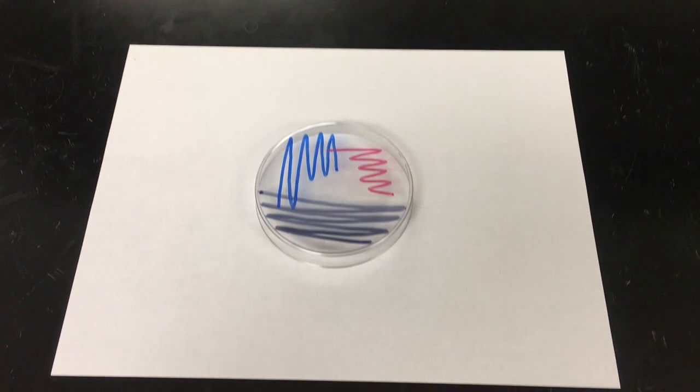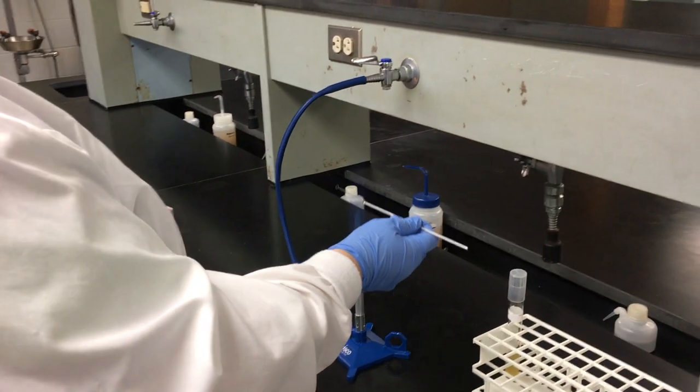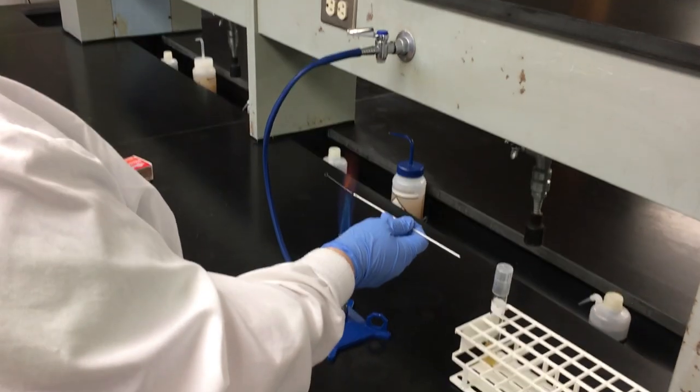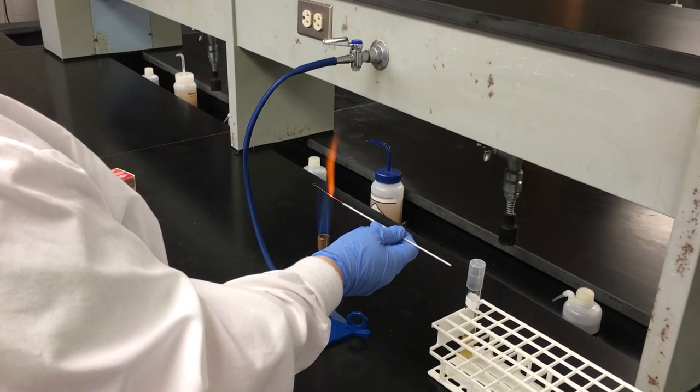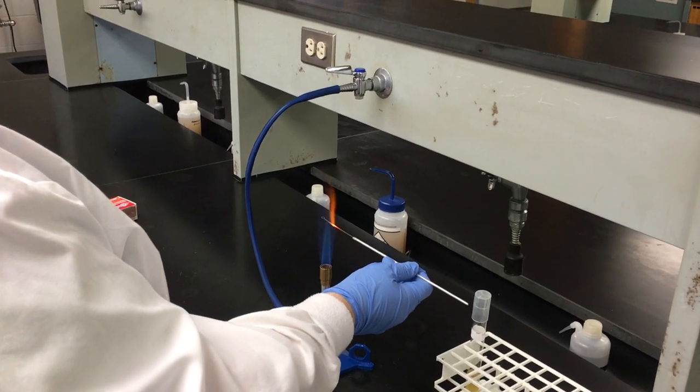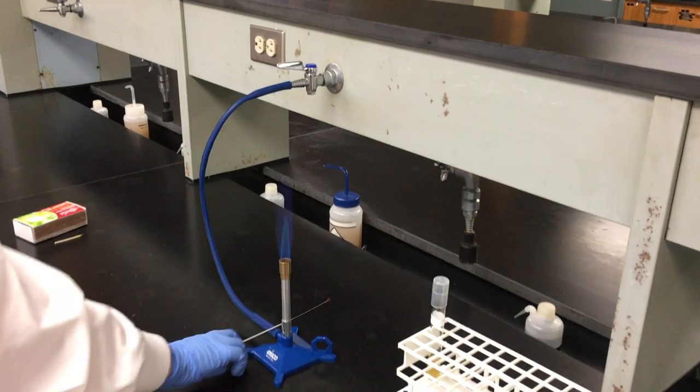This is what step three should look like. Your last step will be then sterilizing your loop from handle till tip to prevent the spread of organism anywhere on your lab bench. And that is pure culture.